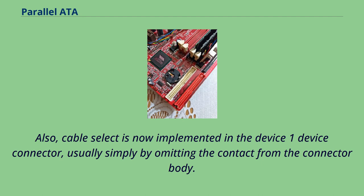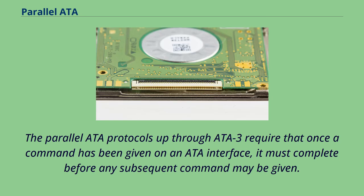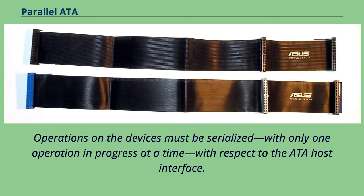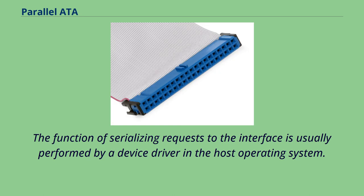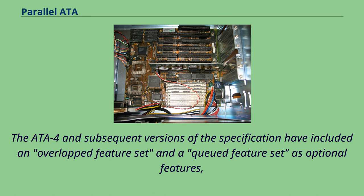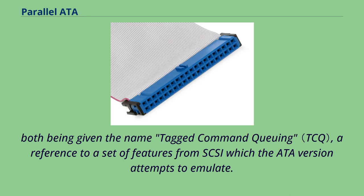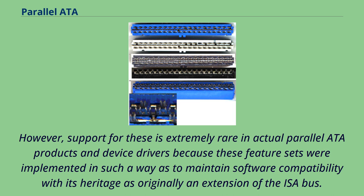The Parallel ATA protocols up through ATA-3 require that once a command has been given on an ATA interface, it must complete before any subsequent command may be given. Operations on the devices must be serialized with only one operation in progress at a time with respect to the ATA host interface. A useful mental model is that the host ATA interface is busy with the first request for its entire duration and therefore cannot be told about another request until the first one is complete. The function of serializing requests to the interface is usually performed by a device driver in the host operating system. The ATA-4 and subsequent versions of the specification have included an overlap feature set and a queued feature set as optional features, both given the name tagged command queuing. However, support for these is extremely rare in actual Parallel ATA products and device drivers, because these feature sets were implemented in such a way as to maintain software compatibility with its heritage as originally an extension of the ISA bus, resulting in excessive CPU utilization which largely negated the advantages of command queuing.